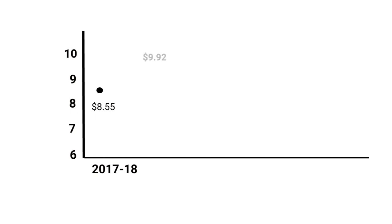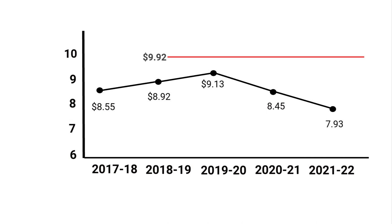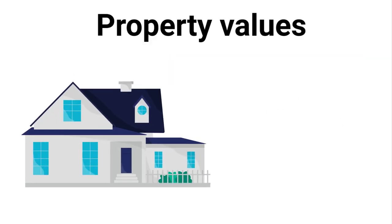When voters approved the referendum in 2018, they were expecting the mill rate to increase $1.37, from $8.55 to $9.92. Instead, four years after the referendum passed, the district mill rate is down 62 cents. Among all the factors affecting the mill rate, community property value growth had the most significant impact.